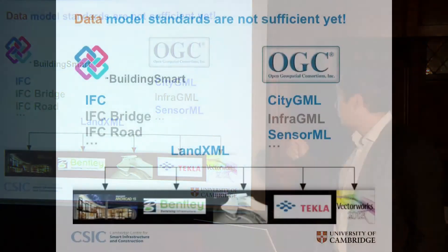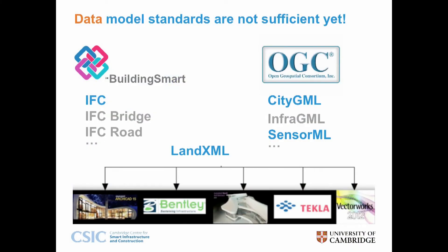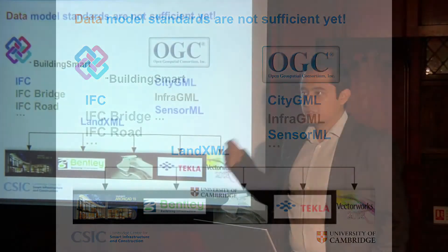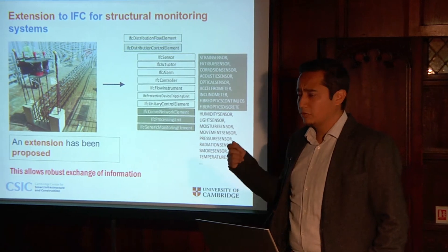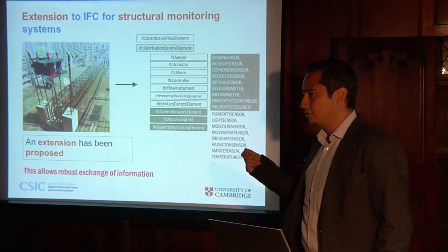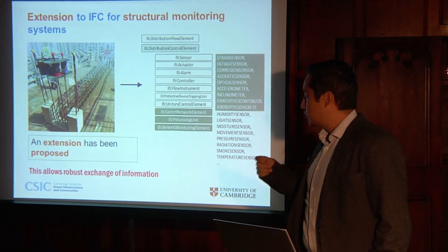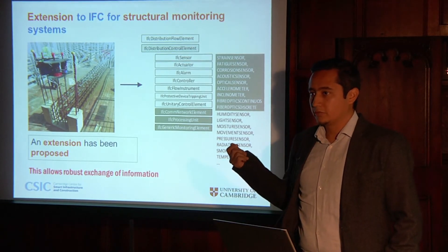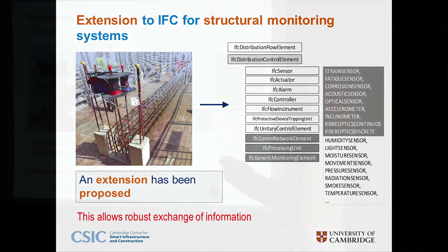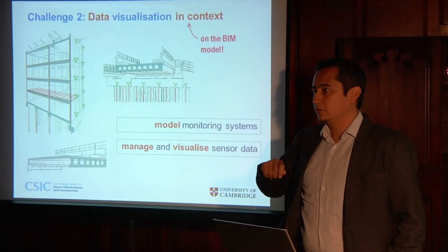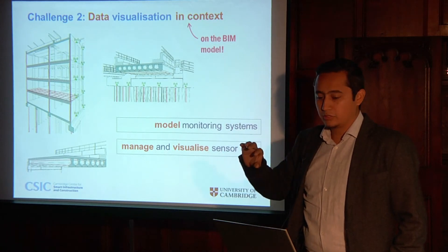Building SMART and the Open Geospatial Consortium develop standards to be able to exchange data, but they are not sufficient — infrastructure assets and monitoring systems cannot be described by them currently. That's why we have developed an extension for infrastructure assets, and this extension will allow us to model the systems in BIM models so that these BIM models can have the sensor data included within them.